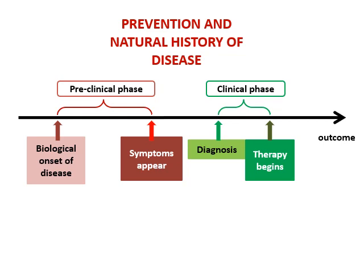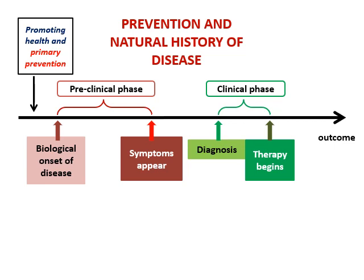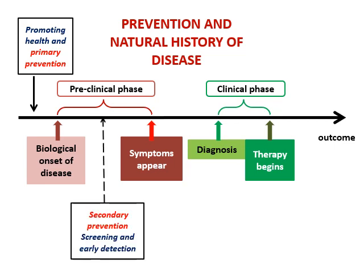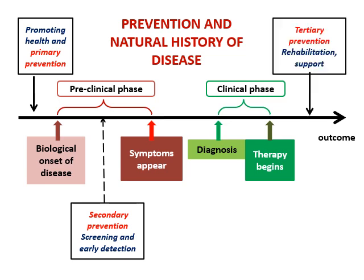Now let us see the levels of prevention. Primary prevention is before the onset of the disease and includes health promotion and specific protection. Secondary prevention is after the onset of the disease but before symptoms appear, so early diagnosis and treatment come under secondary prevention. Tertiary prevention is done after complications occur and includes rehabilitation and disability limitation.